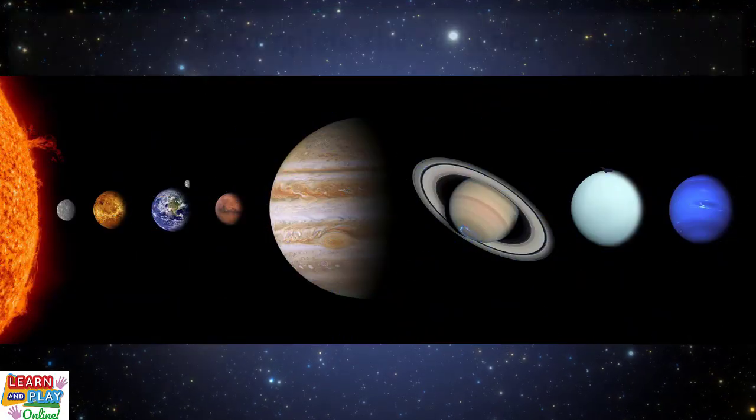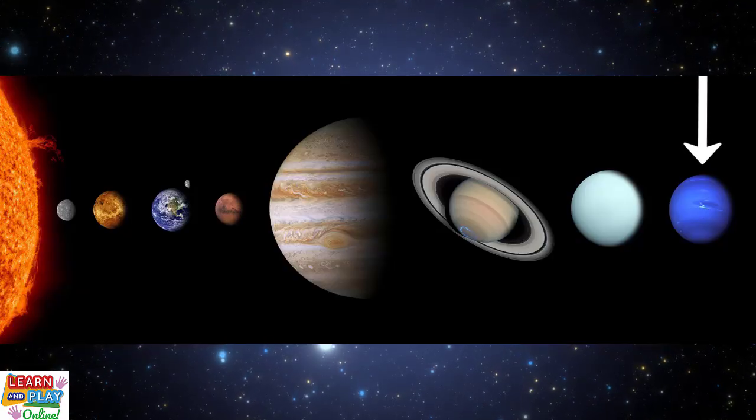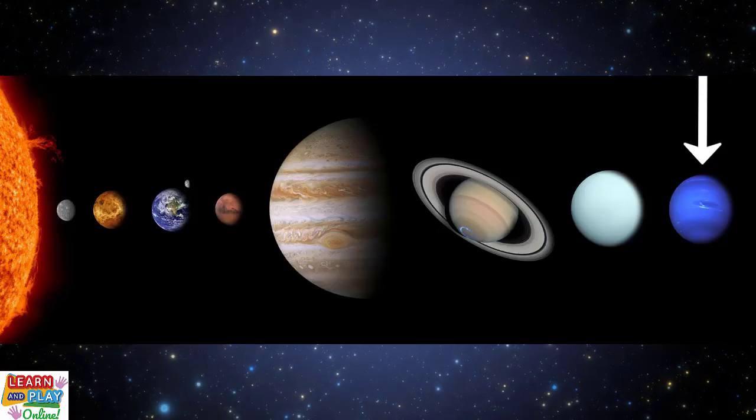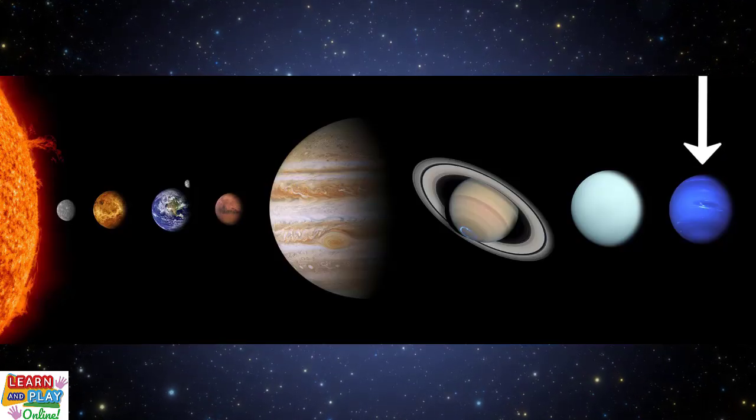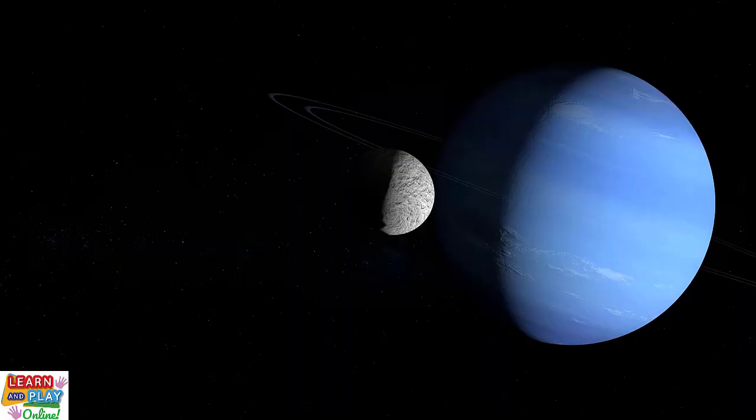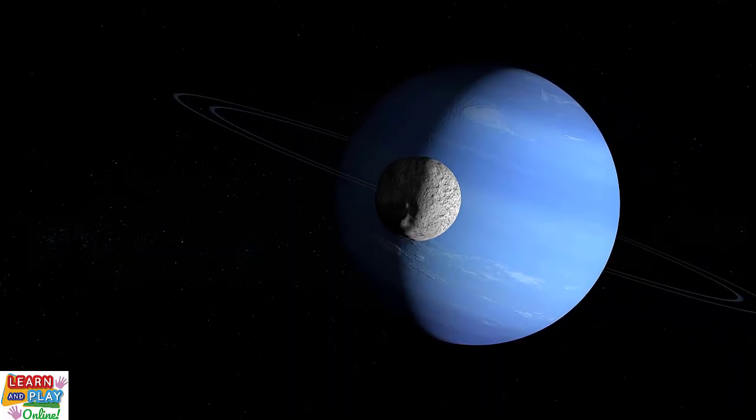Neptune is the eighth and last planet that orbits the sun in our solar system. It is categorized as an ice giant because more than 80% of its composition is made up of icy materials such as water, methane, and ammonia. Just like its neighboring outer planets, Neptune has a ring system.